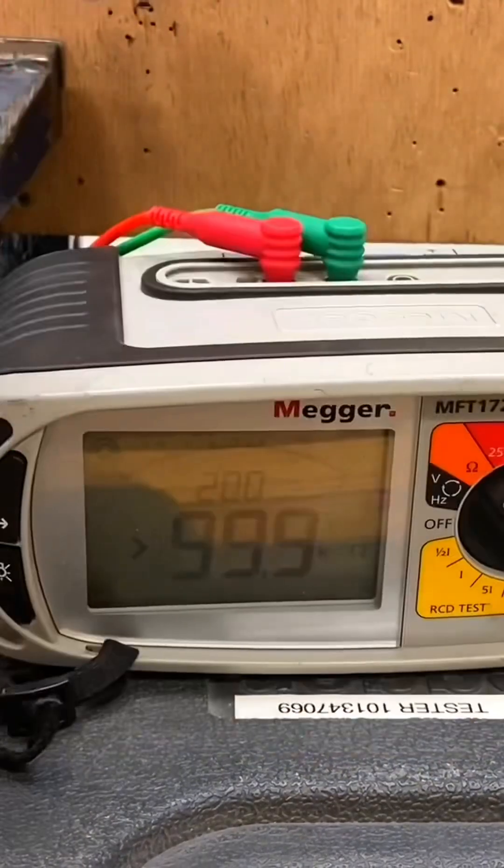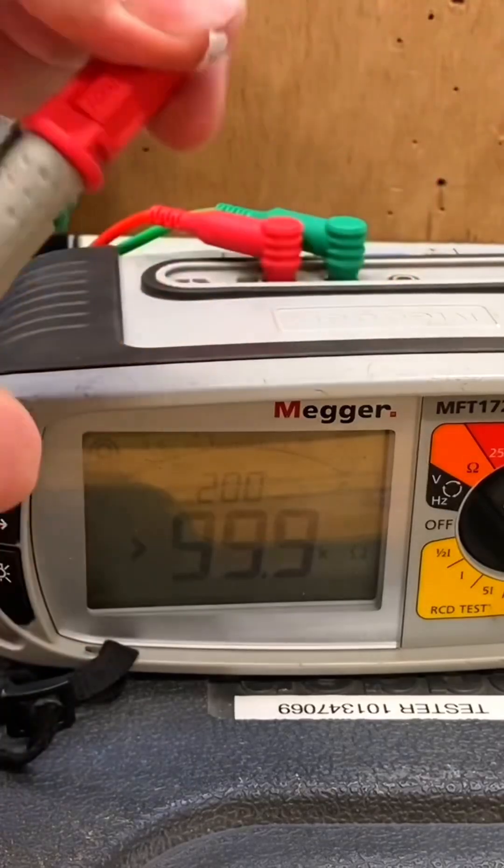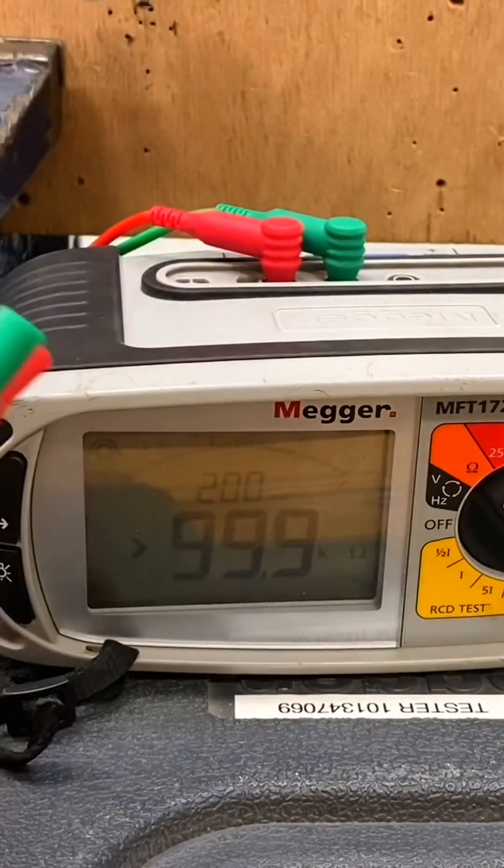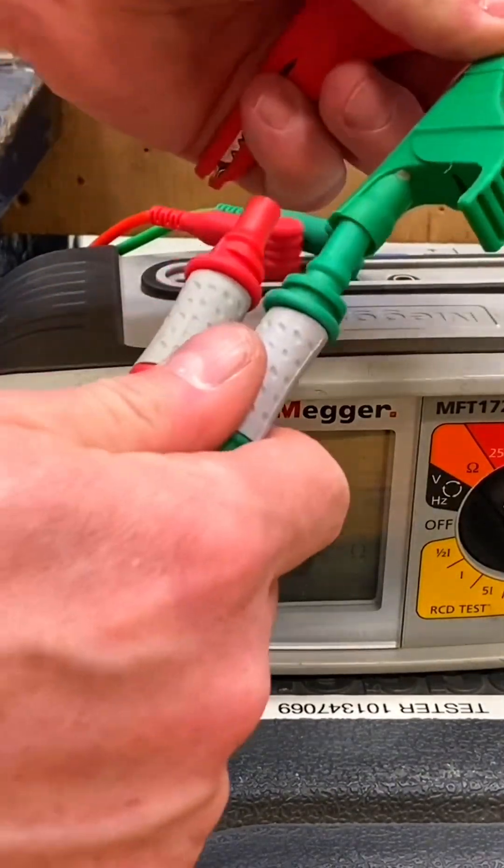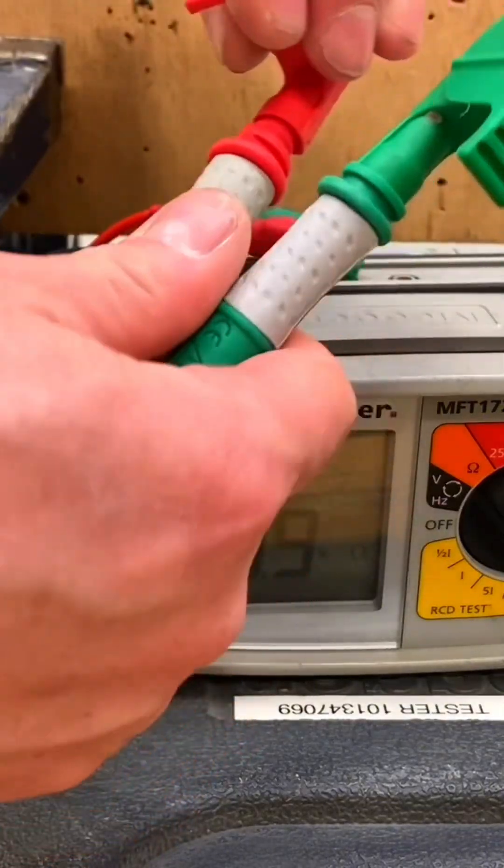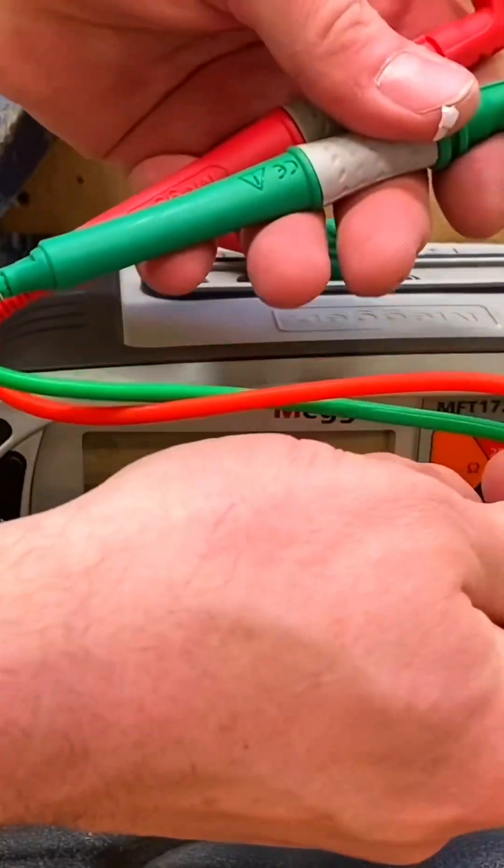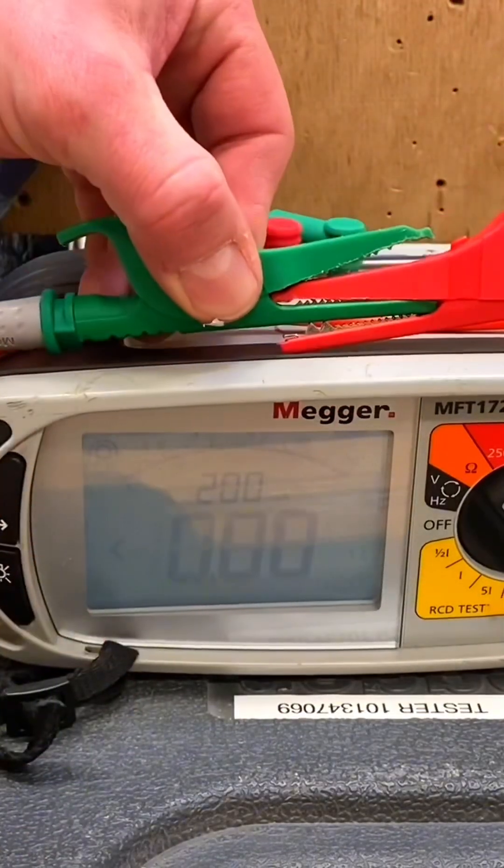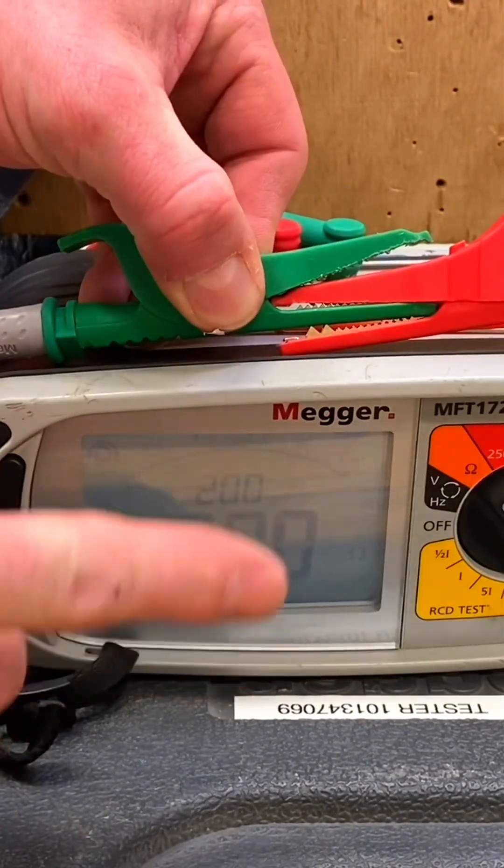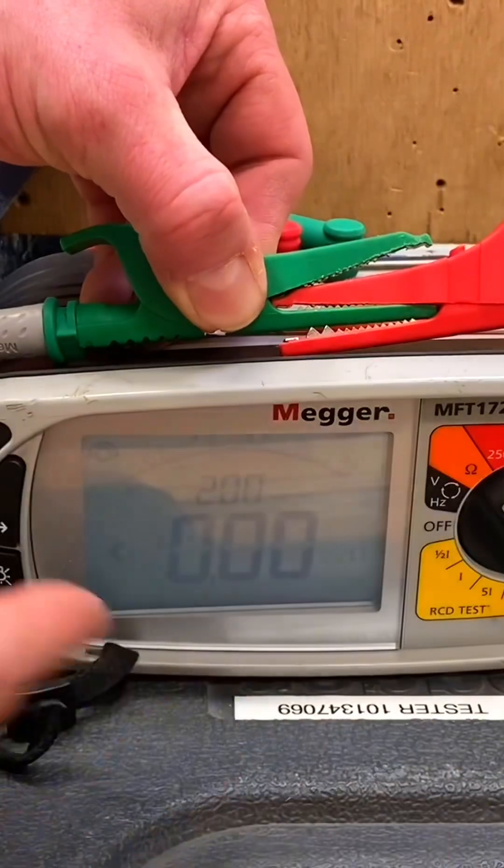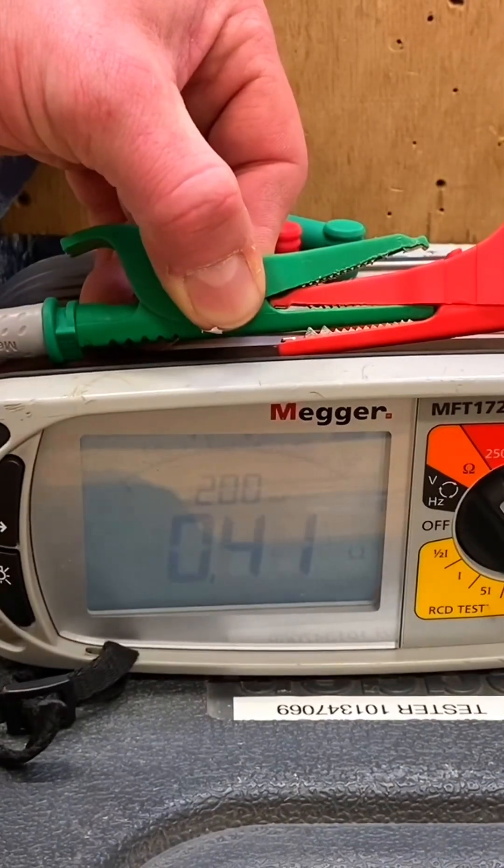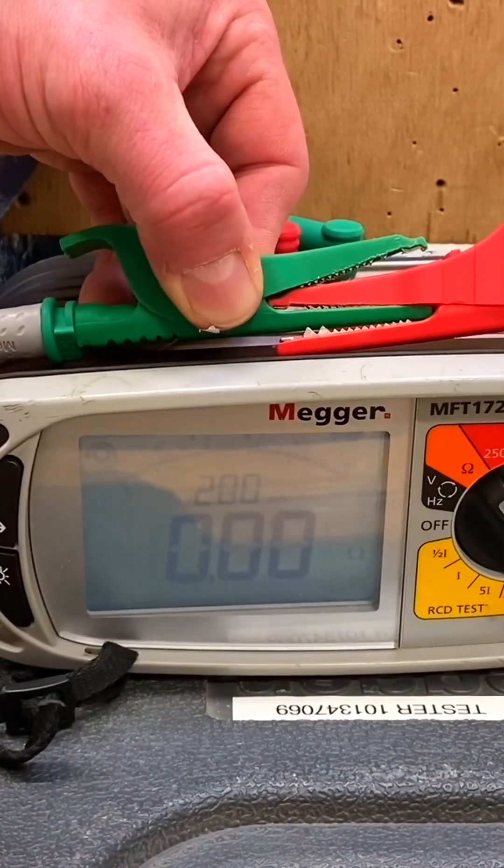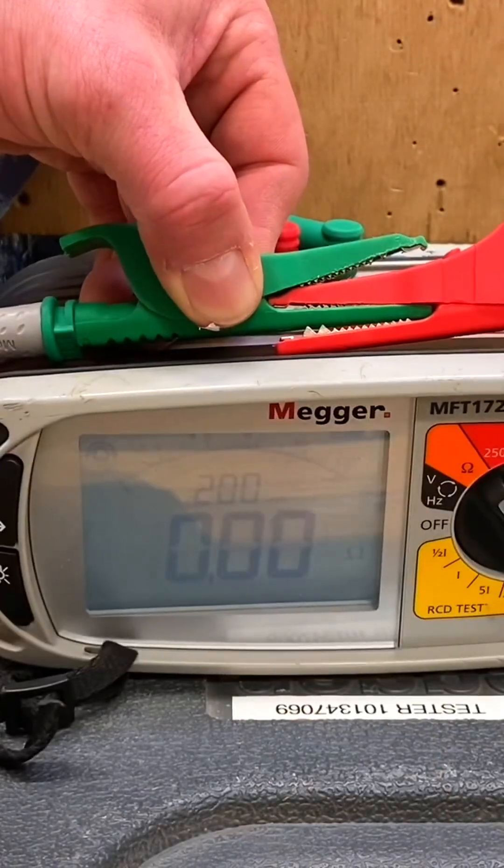I'm going to change to crocodile clips to remove the resistance of the leads. Remember, the leads have copper in them and will offer resistance in circuit. Maximum surface area to maximum surface area - flashing zero means it's below zero. Press the test button once, then again, and we've got a stationary zero. We've removed the resistance of these leads and we're ready to do the test.